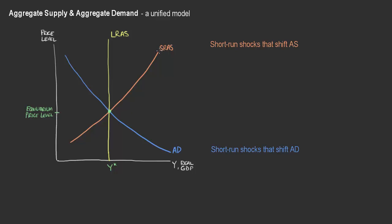We've been exploring aggregate supply and aggregate demand in its pieces to understand why the short-run aggregate supply curve might shift upwards, why there might be a difference between the short-run and long-run time horizons for aggregate supply when thinking about the relationship between the price level, nominal variables, and real GDP and output for the economy. That brings us to this unified model where we can put all of these pieces together, and there would be some equilibrium where aggregate demand and aggregate supply intersect.